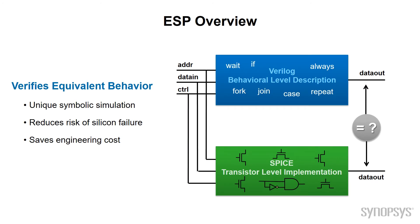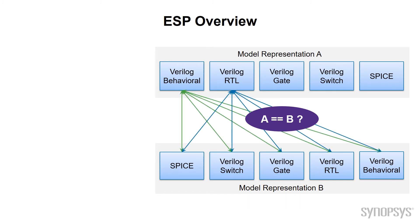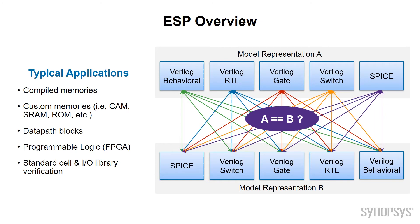ESP uses formal techniques to prove that the outputs of the Verilog model and the SPICE model are functionally the same, using a technique called symbolic simulation. This technique uses a test bench like traditional Verilog simulation, except that instead of ones and zeros, a unique symbol is applied to the inputs. ESP then compares the resulting output equations. Typical applications include compiled memories, full custom memories like SRAM, cache, and ROMs.